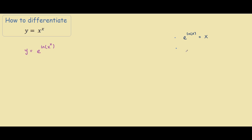One more law that we need to know about logs is when we have a log of x raised to the power of y, this is the same thing as y times ln of x, where we just bring the y out to the front. So in this equation, we have y equals e to the x ln of x.